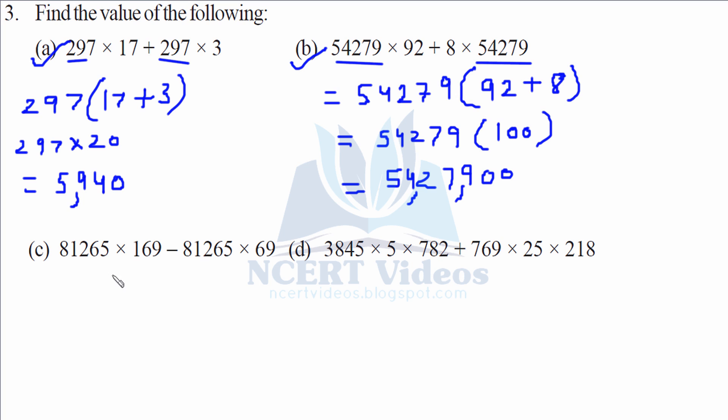Here again, clearly visible, 81265 is common. So 169 minus 69. Remember, there's a minus sign. These are getting subtracted. So it turns out to be 100. Again, it becomes easier to multiply it, simply adding two zeros at the last. That is your question number c.